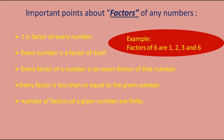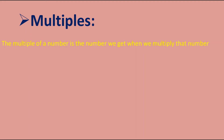Next concept is multiples. The multiple of a number is the number we get when we multiply that number with any other number. To find the multiple of any number, we just multiply that number by any number and we get the multiple. Let's take an example — multiple of two. Just go on multiplying two by any number, starting from one.